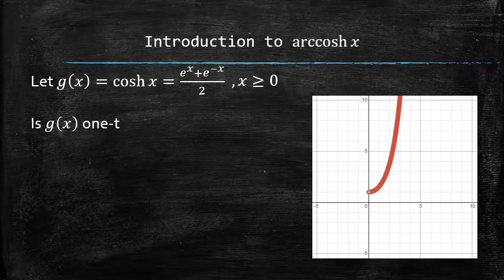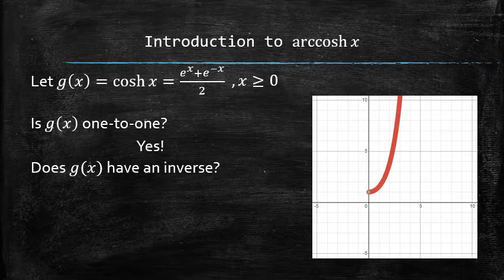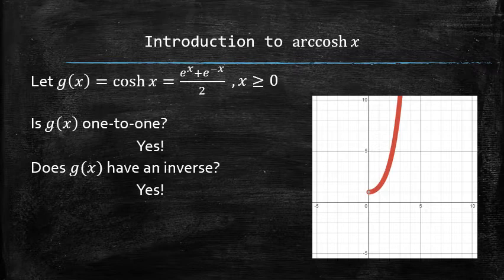Is this function 1 to 1? The answer is yes, because now it passes the horizontal line test. Does this function have an inverse? The answer is also yes, because all 1 to 1 functions have inverse functions.